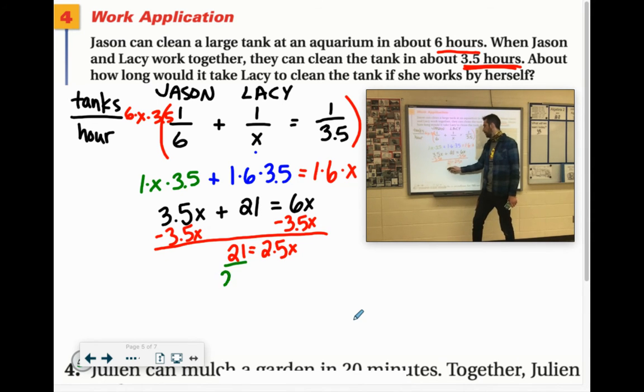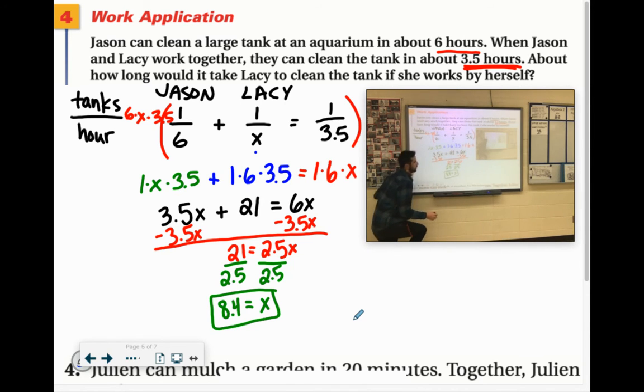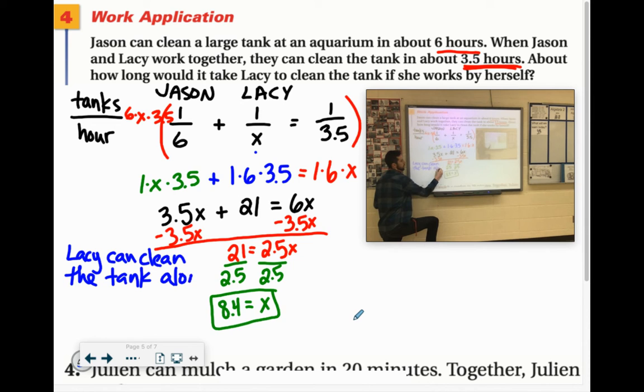Divide by our 2.5. 21 divided by 2.5 comes out to 8.4, and that was the number of hours it took Lacey to clean the tank by herself. So let's write that out. Lacey can clean the tank alone in 8.4 hours.